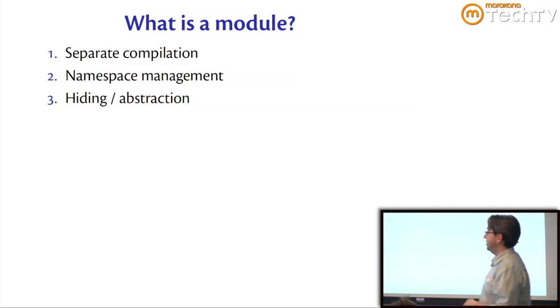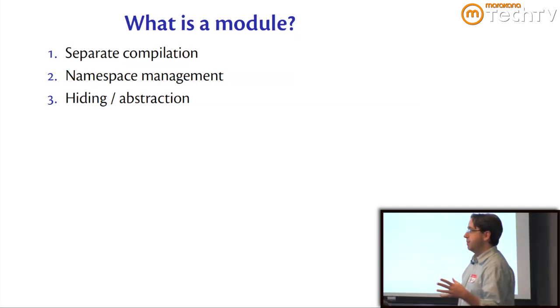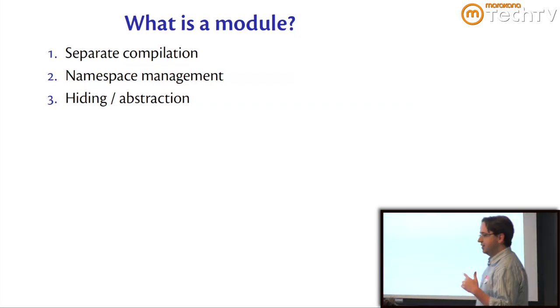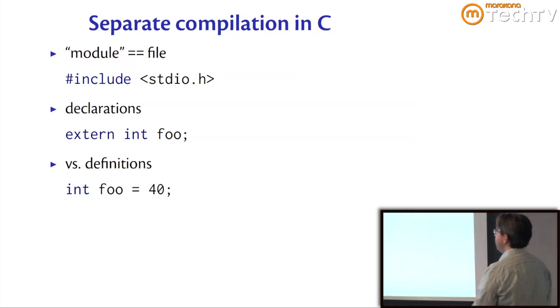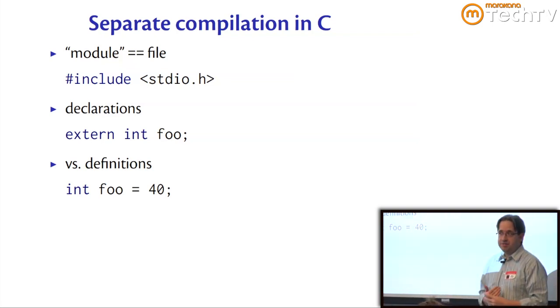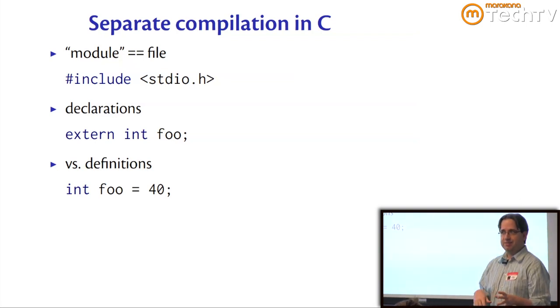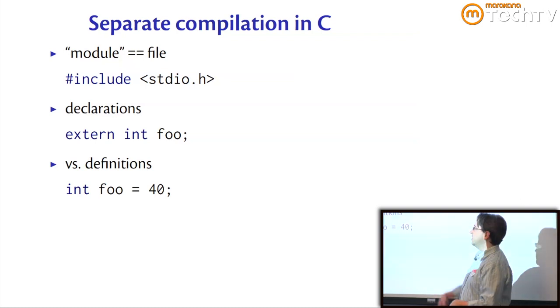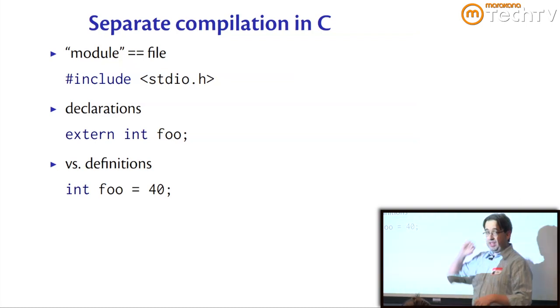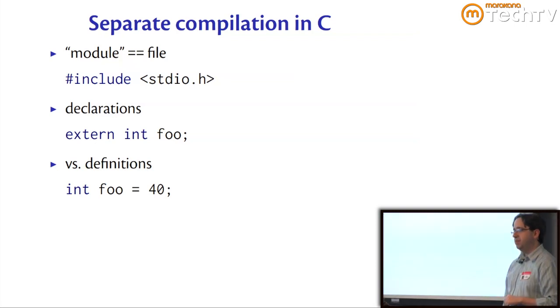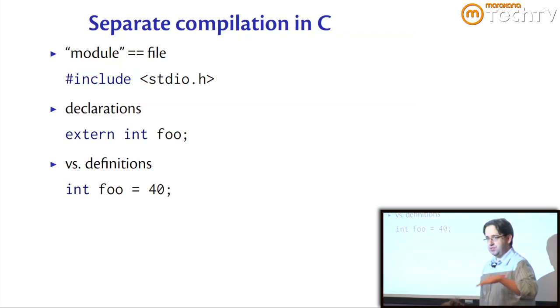I'm going to start with that programming language known as a bastion of modularity: C. In C, a module, if you want to call it that, maybe with scare quotes, is basically just a file. Several languages have this approach that a file is a module. The interesting thing that C does is this idea of separating declarations from definitions so that you can have an interface, a .h file, and then have an implementation in a .c file.